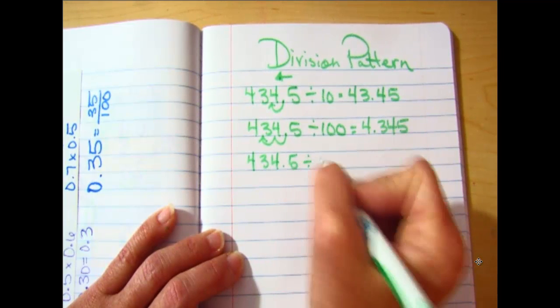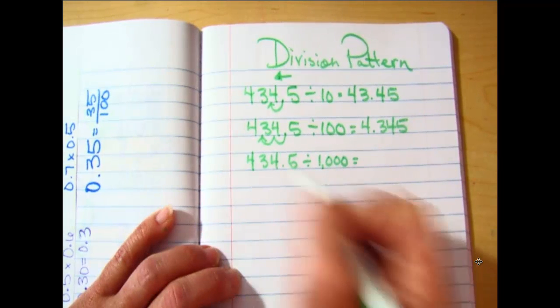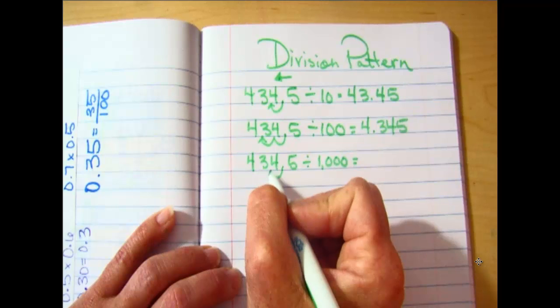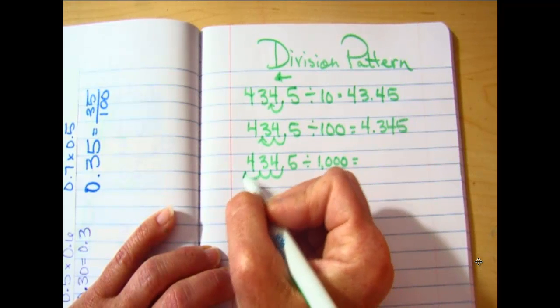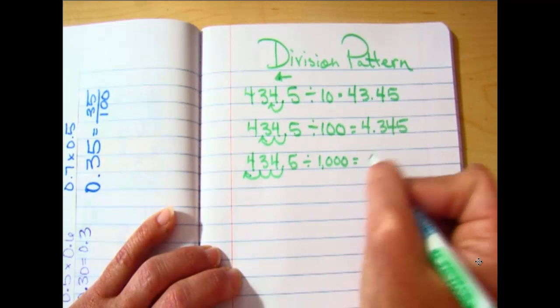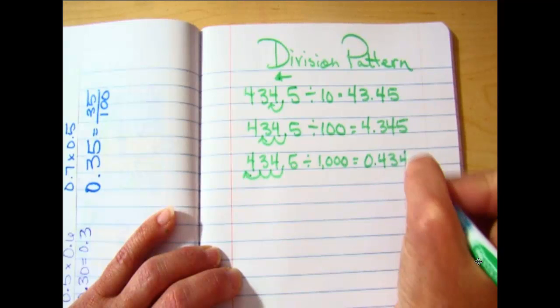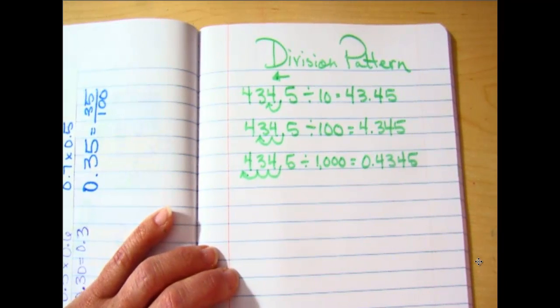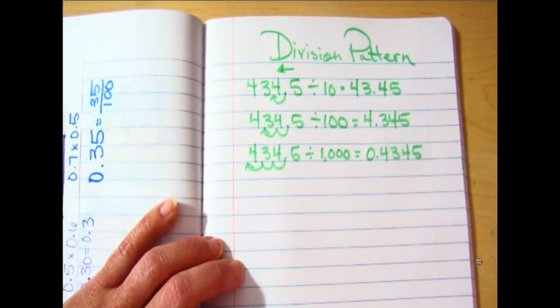Three zeros, three hops. If I divided by 10,000 I would move it four times. Would you add zeros if there's gaps? Yes.